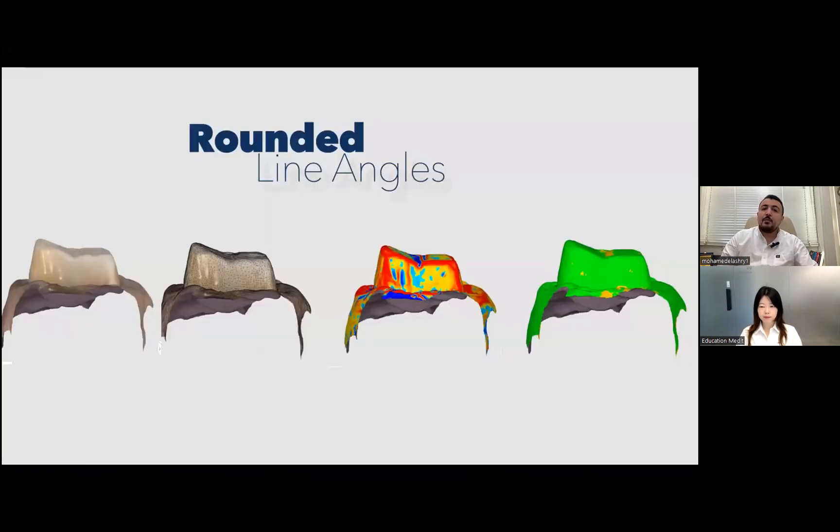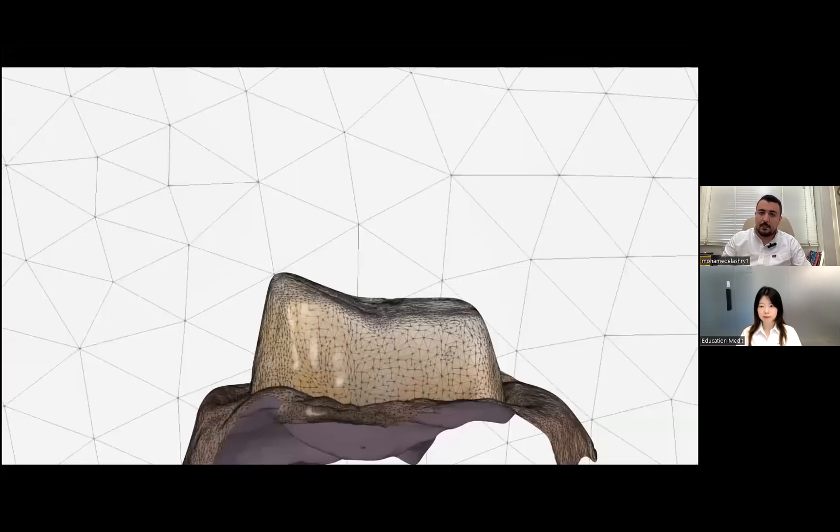The second important thing is the rounded line angles. We have to make rounded line angles for the axial wall and for the occlusal surface. Because we have an error in the milling. The milling errors are very common.